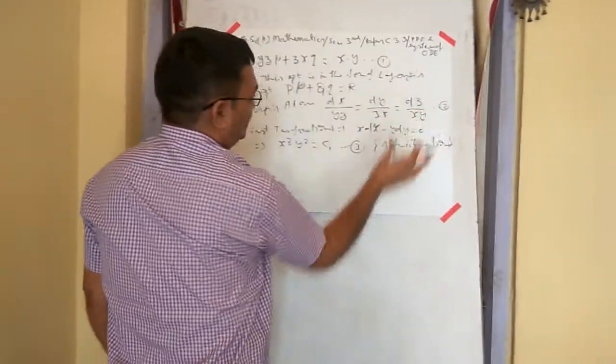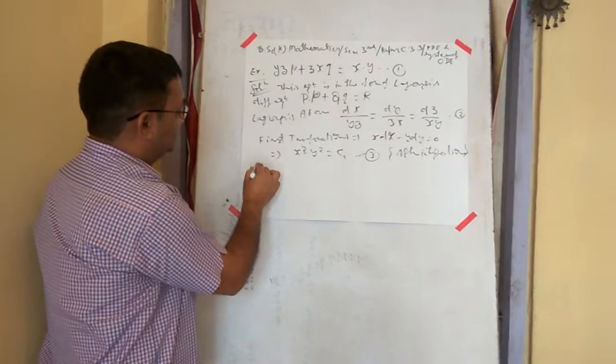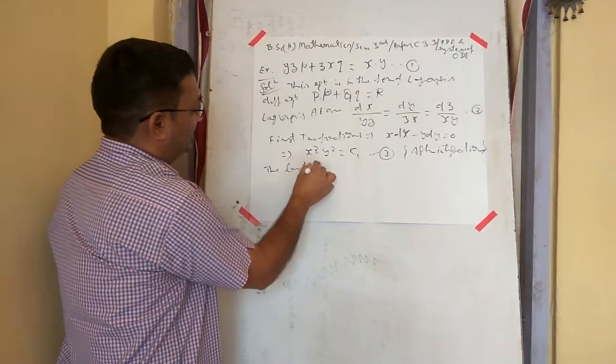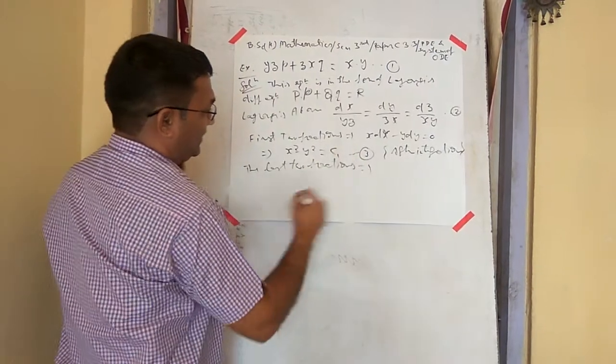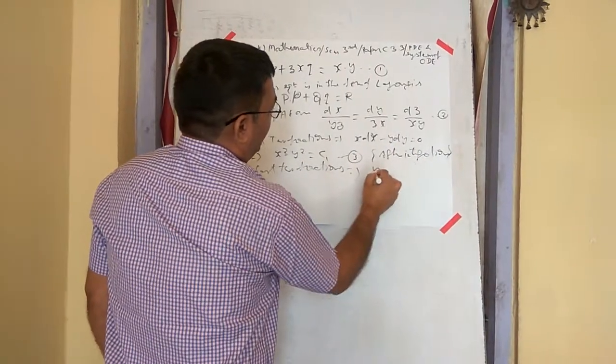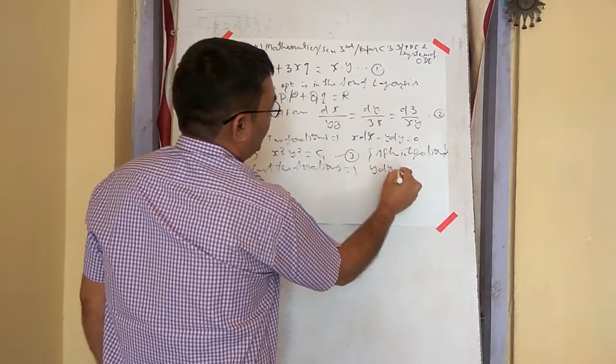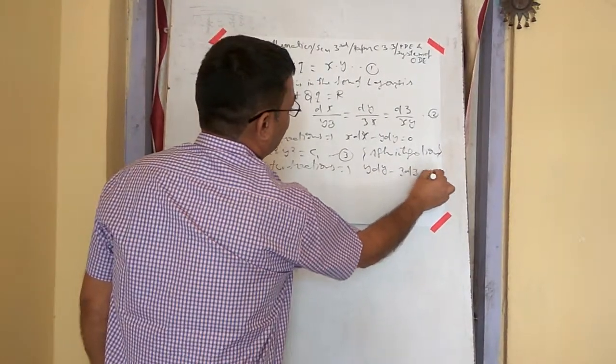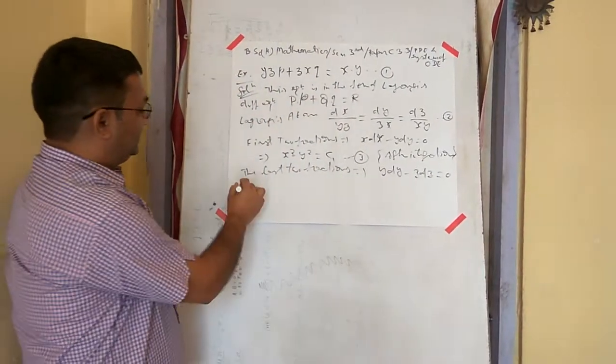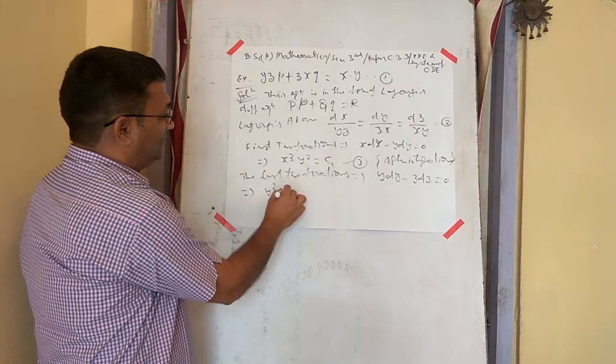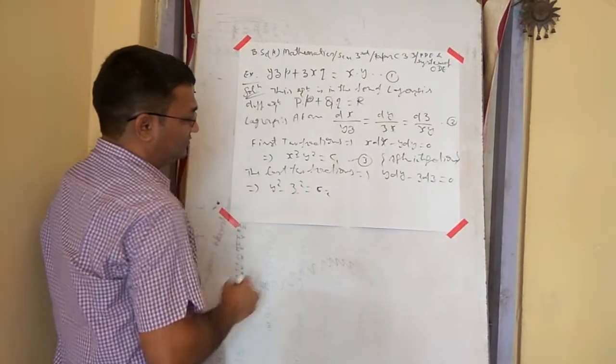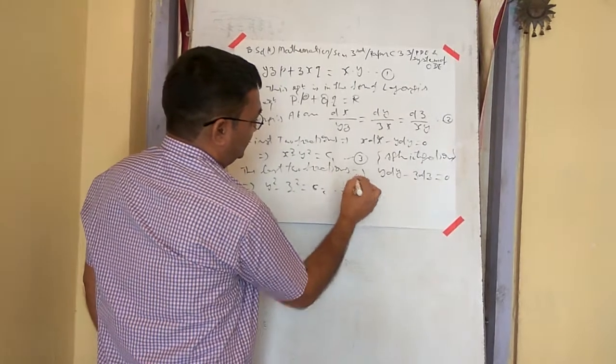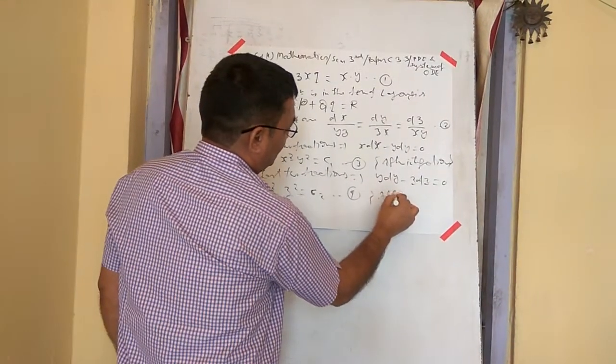The last two fractions of equation 2 implies Y DY minus Z DZ is equal to 0. Which on integration implies that Y square minus Z square is equal to another constant of integration C2. This is equation number 4, after integration.